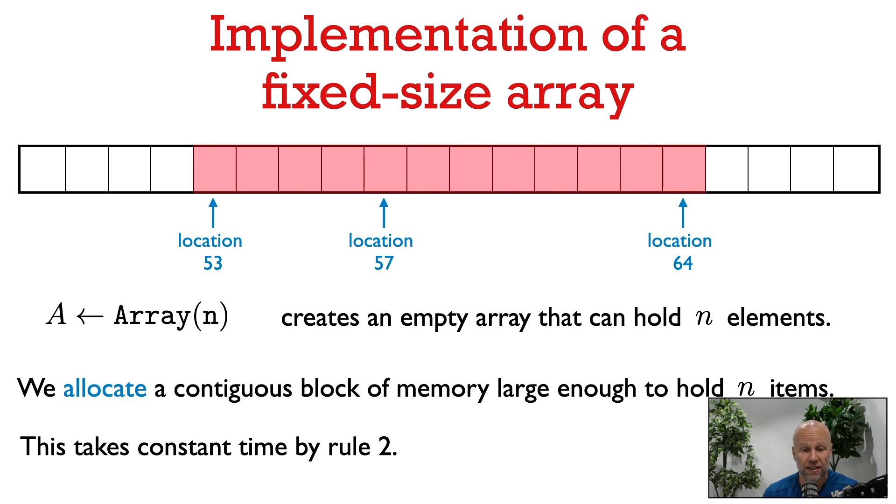If we were initializing each word to some particular value, then of course, doing that would take time proportional to the number of words being allocated. All we want to do here is just allocate enough memory to store n items. So this memory is not initialized. It just holds whatever values were written there before.